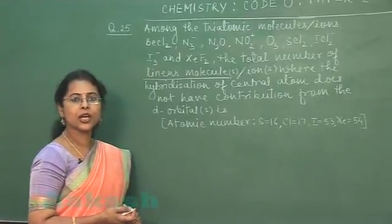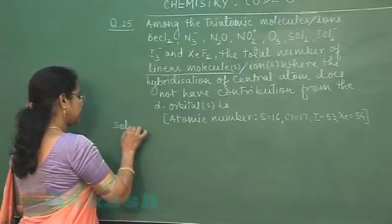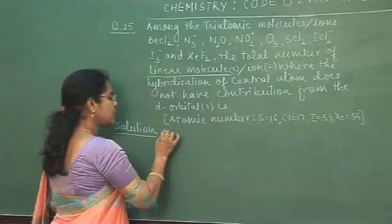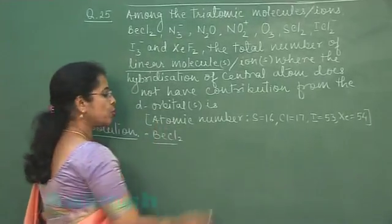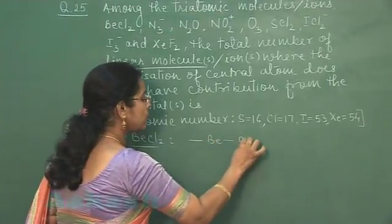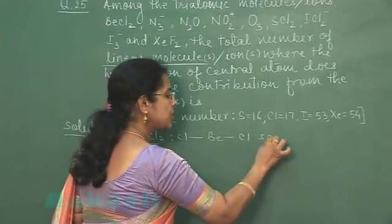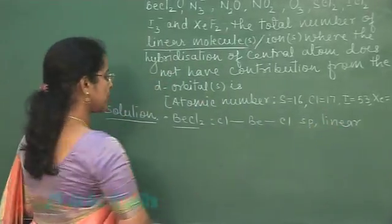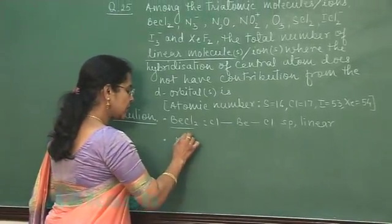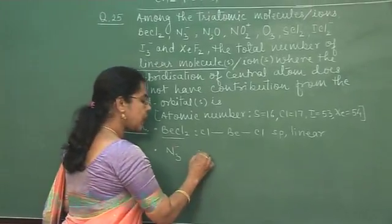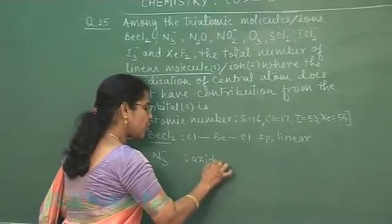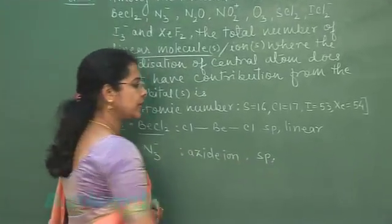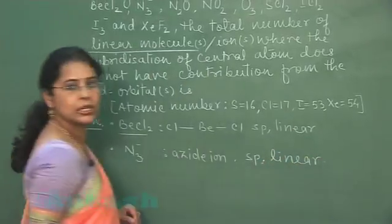To solve this question, we need to draw the structure of each given species. The first one is beryllium chloride. Beryllium participates in sp hybridization, so this molecule is linear. The second one is N3 negative, the azide ion. The central nitrogen atom is bonded to two other nitrogen atoms, is sp hybridized, and the molecular shape is linear.